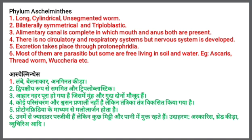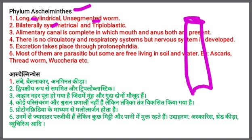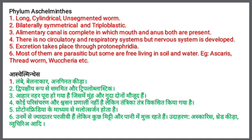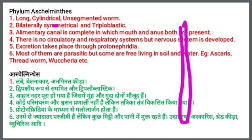Phylum Aeschelminthes: the first feature is they are long, cylindrical, and unsegmented worms. They are long in length, cylindrical in shape, and unsegmented, meaning they are not broken up into parts. They are simple and continuous, cylindrical in structure.